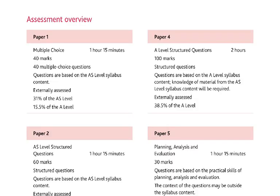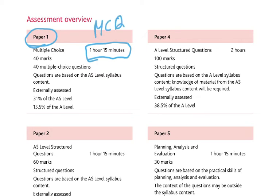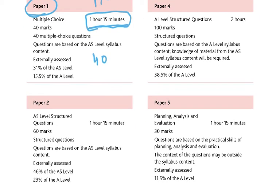Looking at the number of papers you have: Paper 1 is an MCQ paper and the timing has been increased to 1 hour 15 minutes — this is the paper usually at the end of the exam, and this year it's at the beginning of June, on the 9th of June. Paper 2 is also 1 hour 15 minutes and is for 40 marks as an MCQ. Paper 2 also includes structured questions for 60 marks, also 1 hour 15 minutes, and these are based on the AS level syllabus.